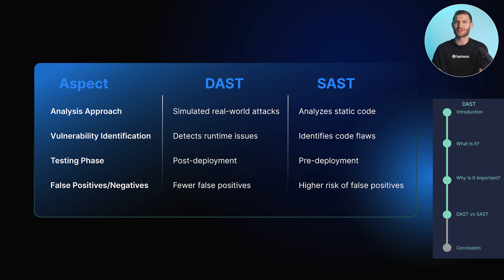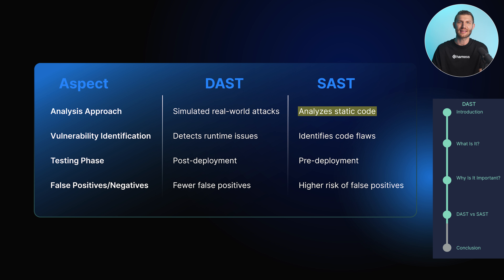How does DAST differ from SAST? In terms of analysis approach, DAST simulates real-world attackers and user behavior, observing the application's response to identify vulnerabilities that manifest during runtime, while SAST analyzes the application's source code, bytecode, or compiled version without executing it, detecting vulnerabilities related to coding flaws and insecure practices.